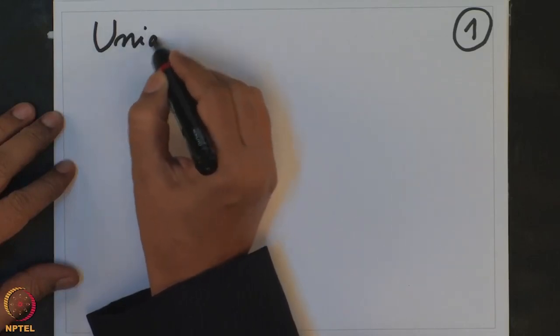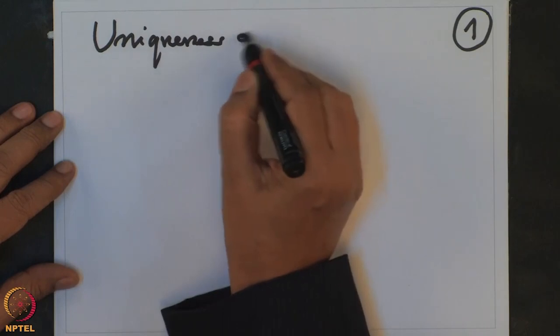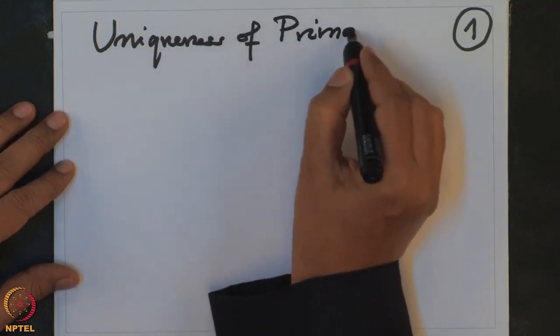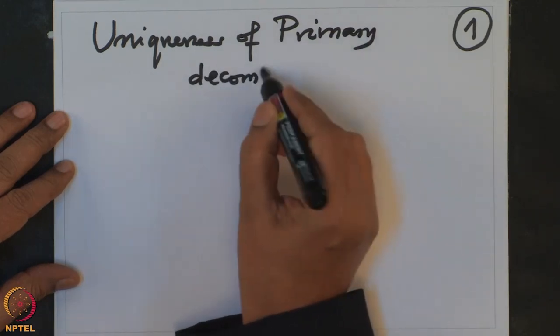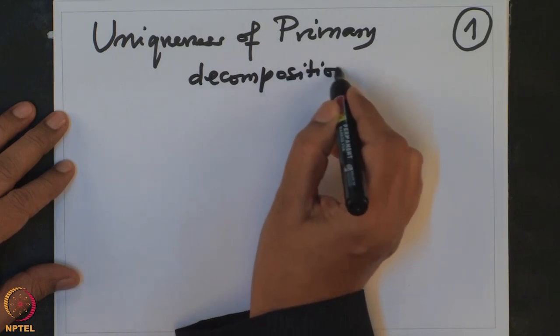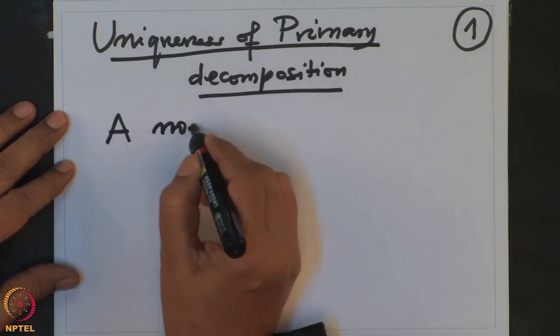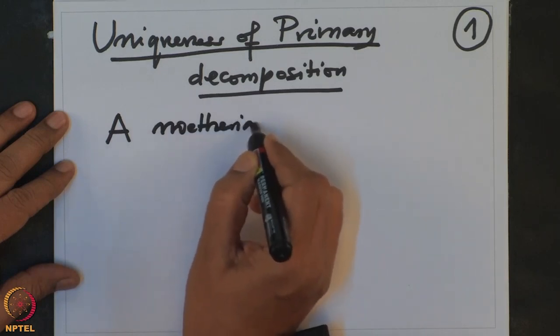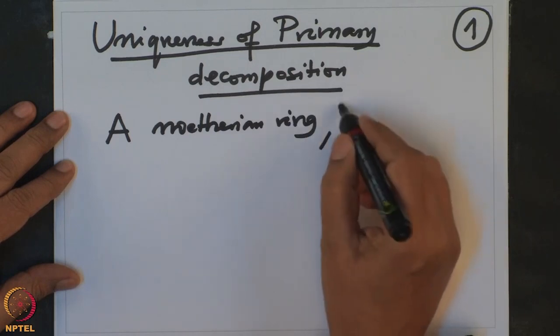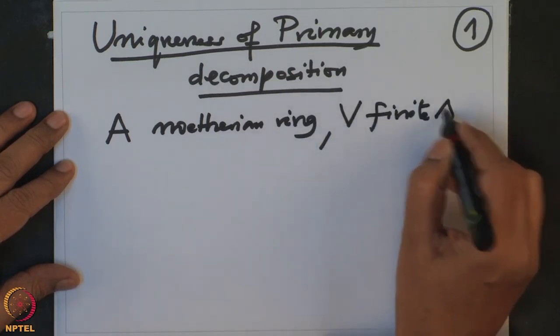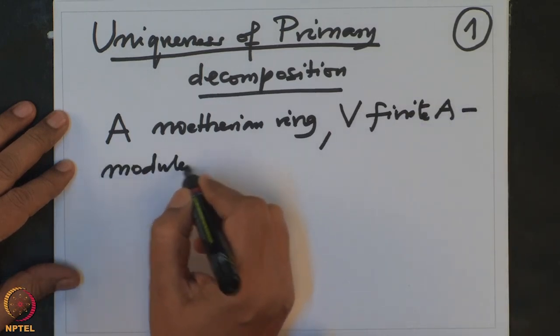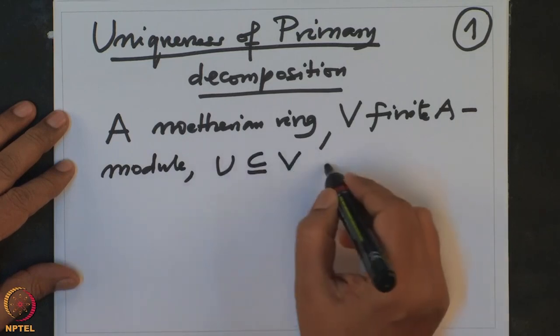In today's lecture we shall discuss about the uniqueness of primary decomposition. So let us recall what we have done so far. We are discussing uniqueness of primary compositions. So as usual, A is a Noetherian ring and V is a finite A-module and U is a submodule of V.